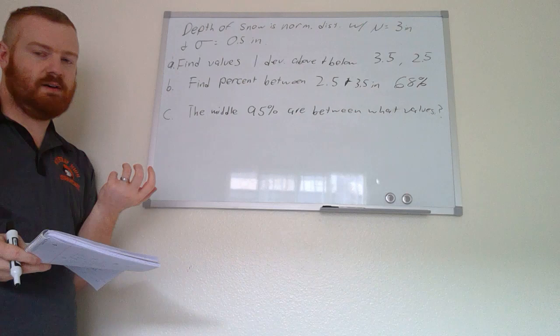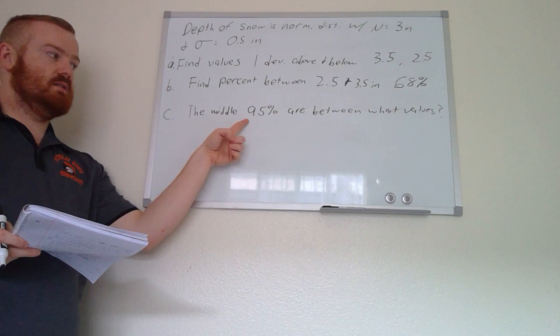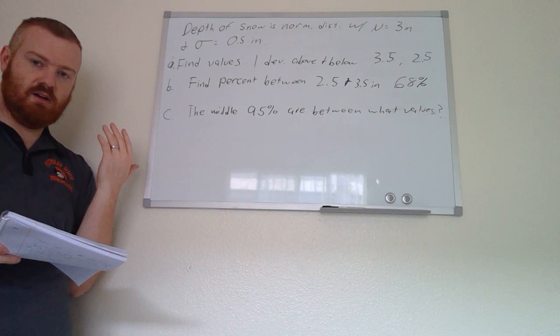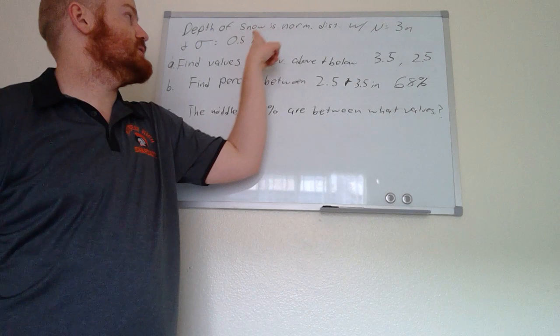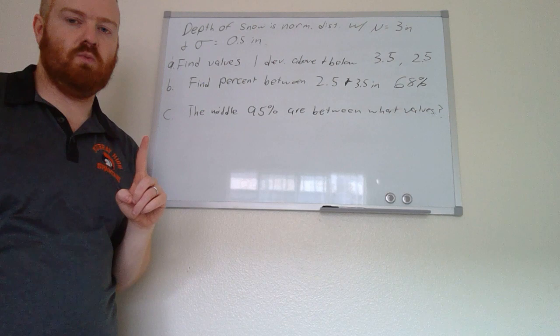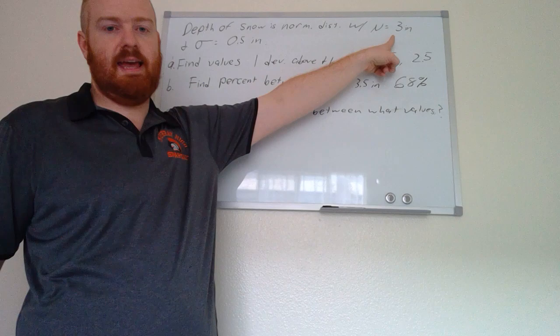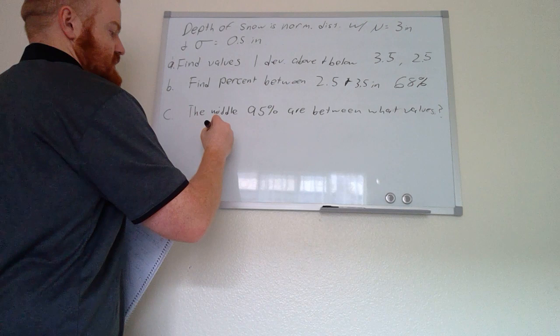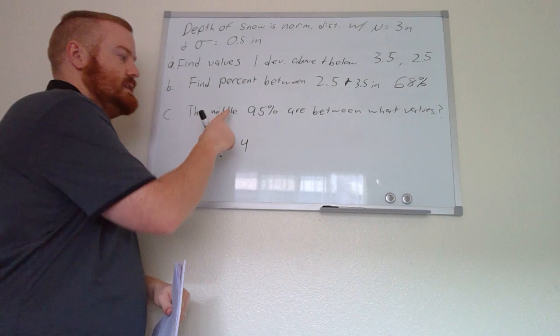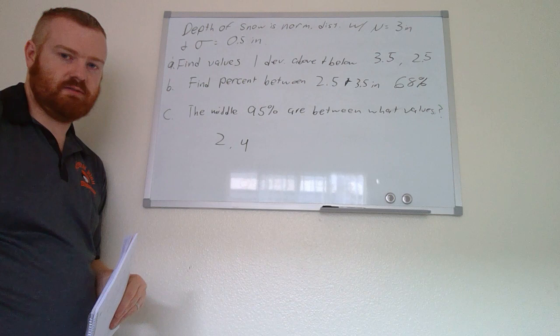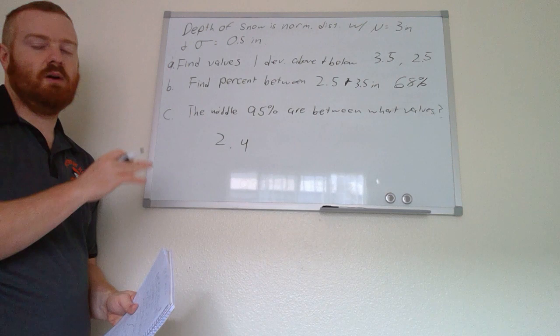For part c, the middle 95% fall between what values? Using the empirical rule, two standard deviations above and below cover 95%. Two standard deviations = 0.5 × 2 = 1 inch. Lower value: 3 − 1 = 2 inches. Upper value: 3 + 1 = 4 inches. So the middle 95% of values fall between 2 and 4 inches of snow.